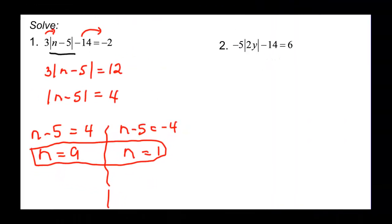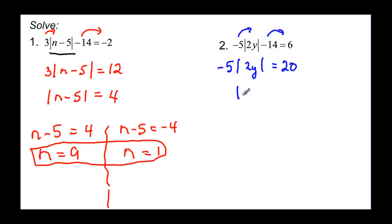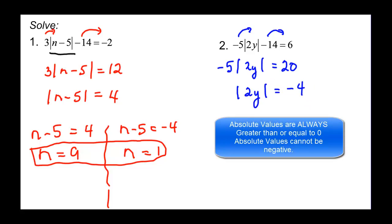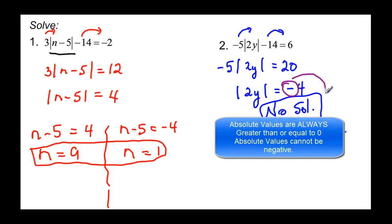Let's try another one. We need to take the 14 to the other side and divide by negative 5. Negative 5 times the absolute value of 2y equals 20 after adding 14. When we divide by negative 5, the absolute value of 2y equals negative 4. Right now we have a problem, because an absolute value cannot equal a negative number — absolute values are always equal to a positive or 0. So we have no solution.